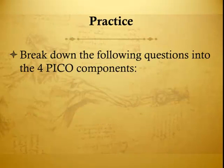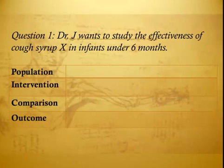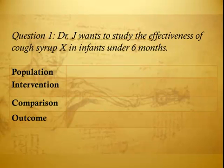Practice: Break down the following question into the four PICO components. Question 1: Dr. J wants to study the effectiveness of cough syrup X in infants under 6 months. Population, Intervention, Comparison, Outcome — you may pause the video and fill out the table.